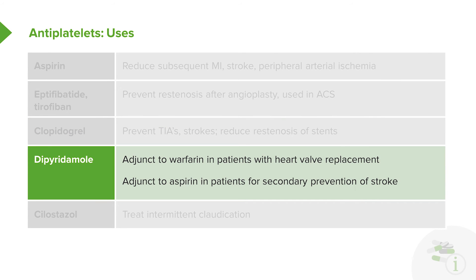Dipyridamole is often used in combination with other drugs. We sometimes use it as an adjunct to warfarin in patients with artificial mechanical heart valves, and in combination with aspirin for secondary prevention of stroke. If a patient has a stroke, we give aspirin. If a patient on aspirin has a stroke, we give aspirin plus dipyridamole, or switch them to one of the other drugs.